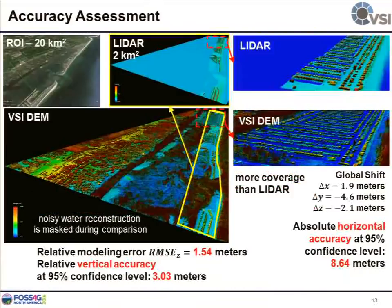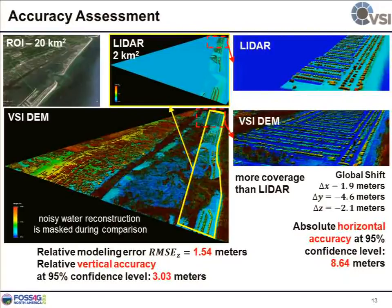We then went to a larger region — a 20-square-kilometer area where we have 2-square-kilometer LiDAR data available — and calculated how close our elevation is to the LiDAR. The answer is: the root mean square error is roughly 1.5 meters, meaning at 95% confidence level, our DSM elevation is within 3 meters of LiDAR. We were pretty happy about this because we are much cheaper than LiDAR and have much larger coverage.